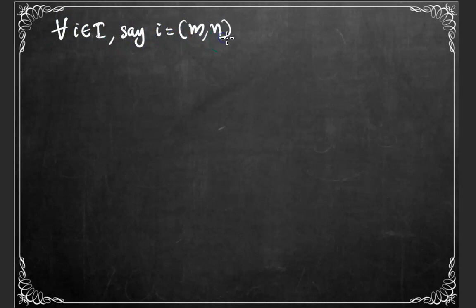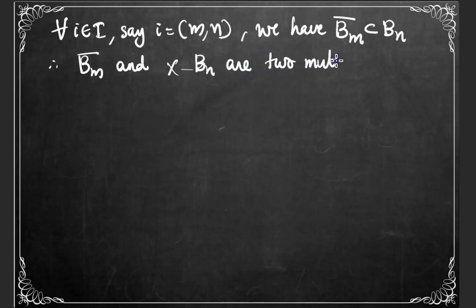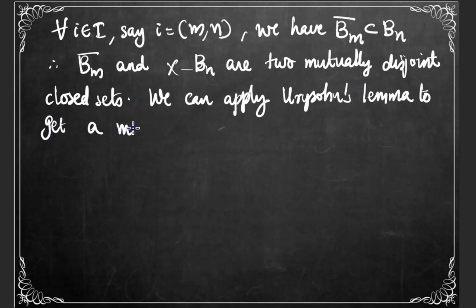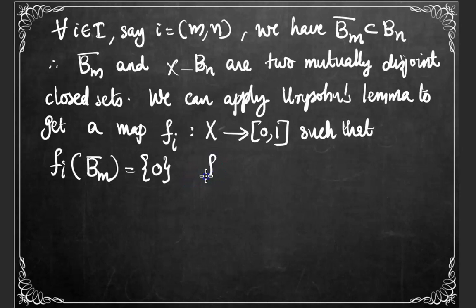For each i in capital I, say i equal to the ordered pair (m, n), we have the condition that the closure of Bm is contained in Bn. Therefore, the closure of Bm and X minus Bn are two mutually disjoint closed sets. Hence, we can apply Urysohn's lemma to these two closed sets to get a map, say f_i, from the space X to the unit interval, such that f_i maps the closure of Bm to 0 and f_i maps X minus Bn to 1.